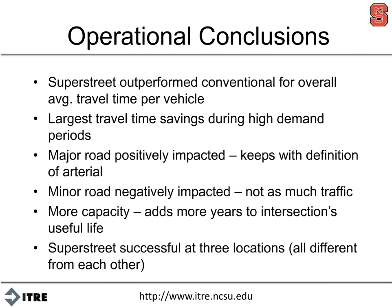The basic operational findings: the super street outperformed the conventional for overall average travel time. The largest travel time savings were during high demand — the further you went right on the table, the more benefit you saw. The major road had positive impacts, which keeps with the definition of an arterial — we want to get throughput on that thing. The minor road was negatively impacted, but not as much, and there's not as much traffic there either. There is more capacity, adding more years to the intersection's useful life — that's one of the big selling points in our public meetings, as the alternative is a very expensive divided facility, whereas we can get 15 to 20 years of extra life out of our arterial without that separated solution.